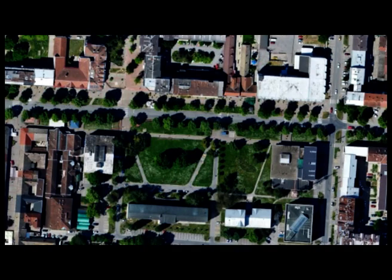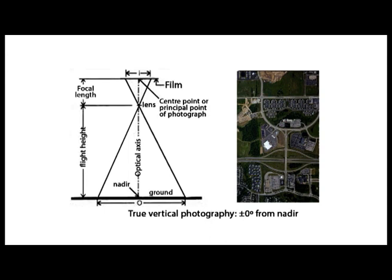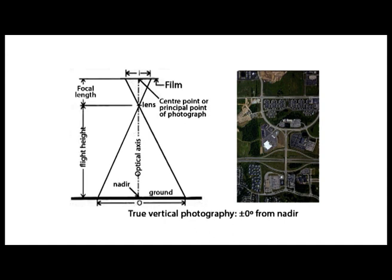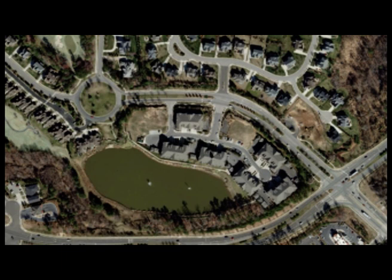By vertical photograph or image we mean an image taken with a camera looking down at the ground. As the aircraft moves, so does the camera, making it impossible to take a truly vertical image. Therefore, the vertical image definition allows a few degrees deviation from the nadir — the line connecting the lens frontal point and the point on the ground exactly beneath the aircraft. In summary, a vertical image is one looking straight down or a few degrees to either side of the aircraft.